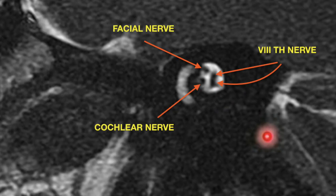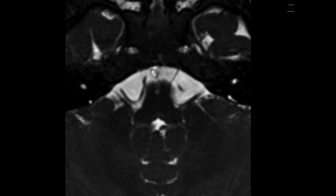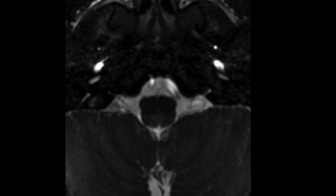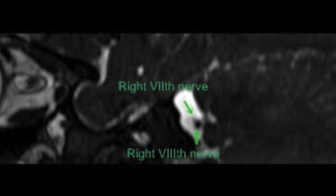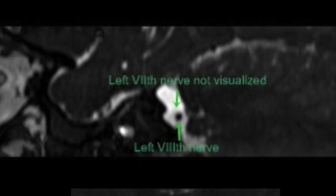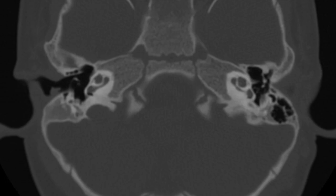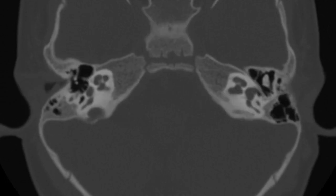In our case, it is difficult to visualize the facial nerve on axial FIESTA sequences. However, on sagittal recon, a thin linear structure is seen accompanying the right 8th nerve in the cisternal segment, thus confirming its presence. On the left side, it is absent.